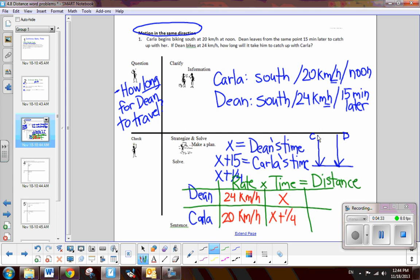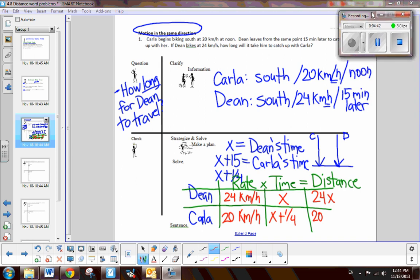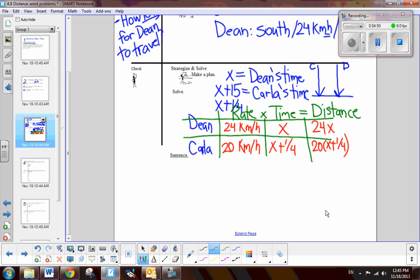Now, how do we find the distance? Well, we go rate times time. So, it's going to be 24 times X for Dean, and then 20 times X plus one-fourth will represent Carla's distance. Now, if you look at the diagram, what do we know about the two distances traveled for both Carla and Dean? Well, they traveled the same distance. The distance Dean traveled was equal to the distance that Carla traveled, because he caught up with her. And now, we would solve for X.